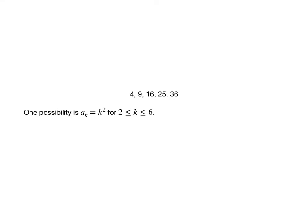So 4, 9, 16, 25, 36. One way to write that is a sub k equals k squared for k greater than or equal to 2 and less than or equal to 6.